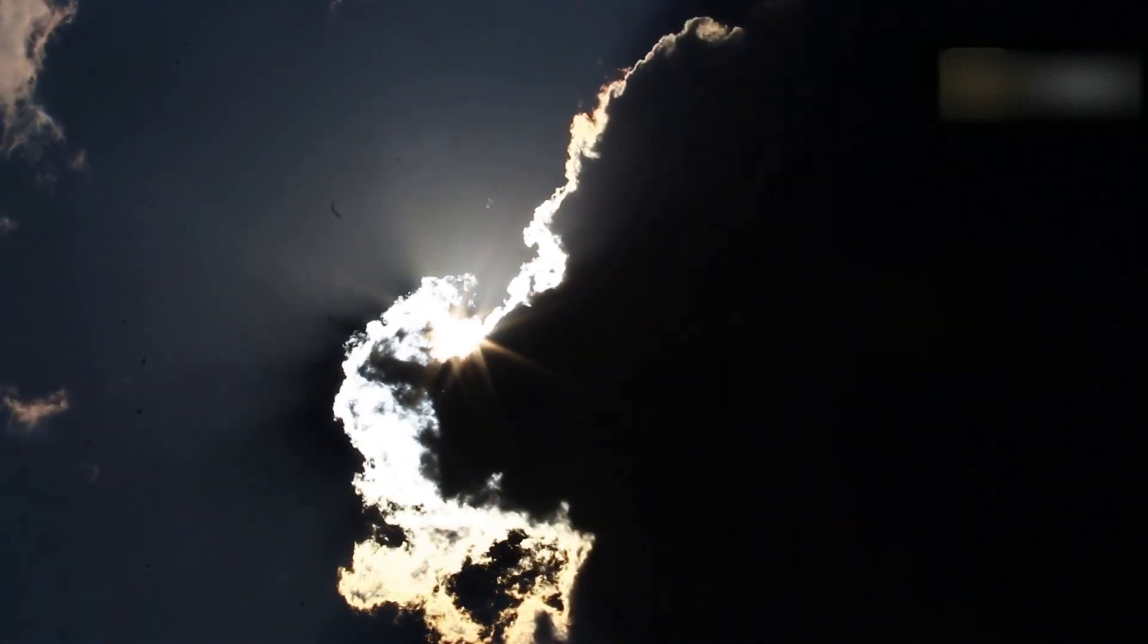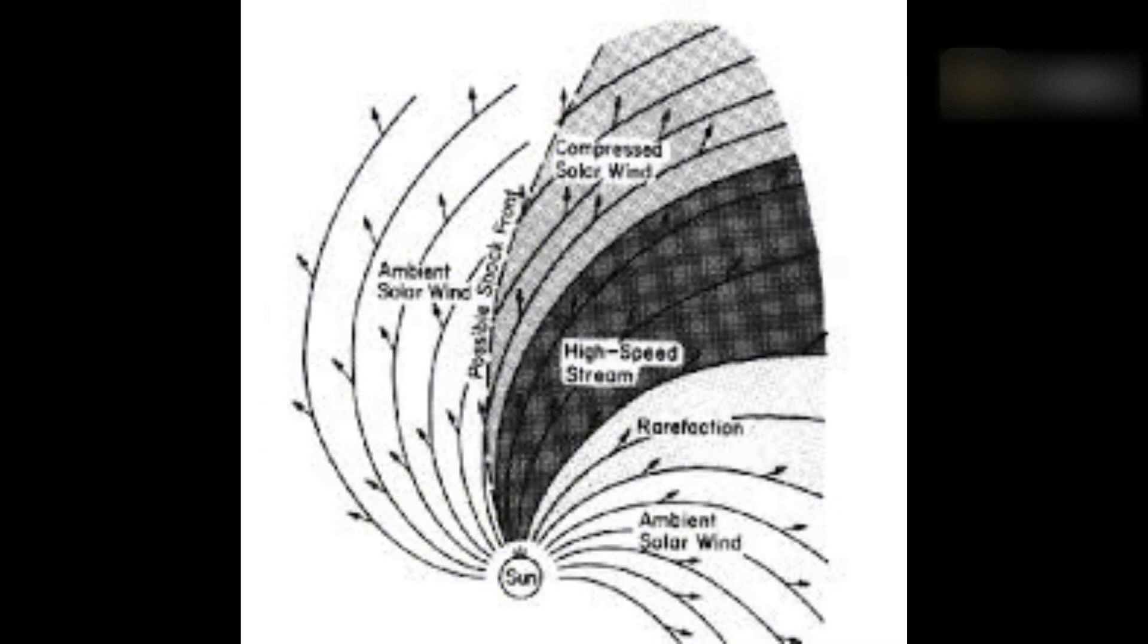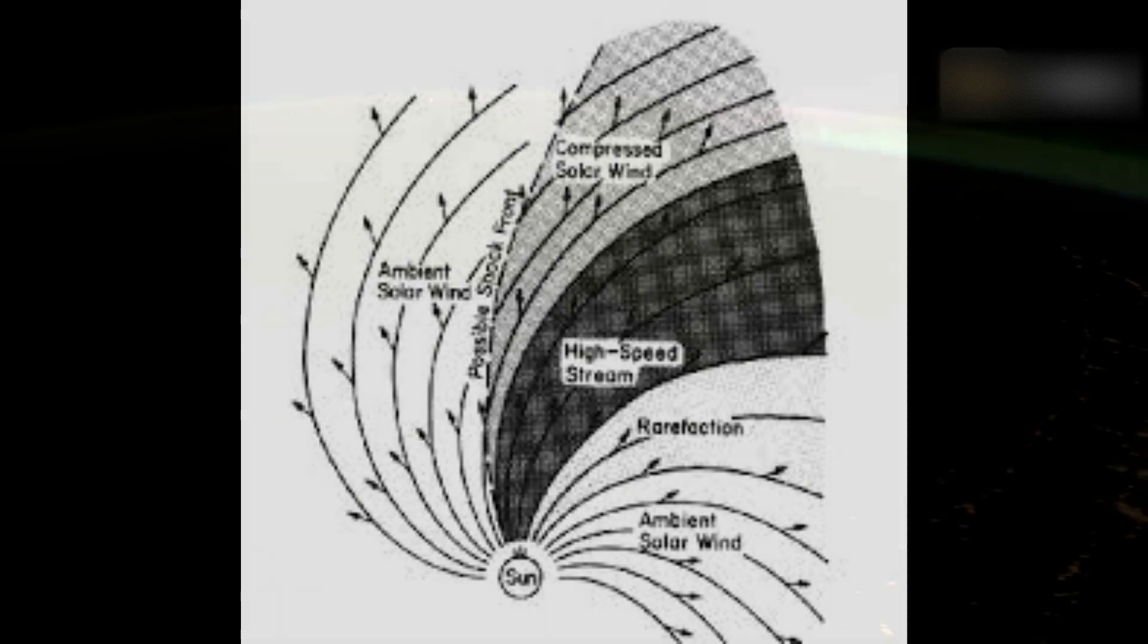The three-dimensional extent and their role in structuring the quiet heliosphere became clear after Ulysses' high-latitude observations became available.